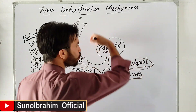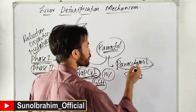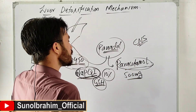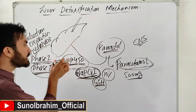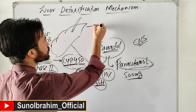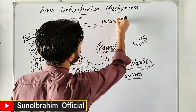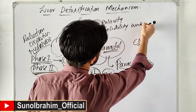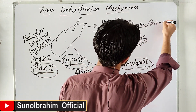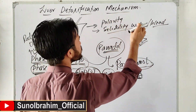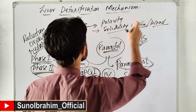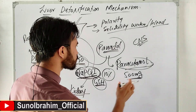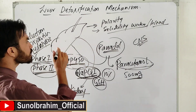Systemically, Paracetamol circulates and the heart pumps it to the CNS - the brain - Central Nervous System. Paracetamol's actual detoxification is what the liver does - it increases the polarity and solubility of the molecule in water, so it can dissolve in blood and travel to the kidneys.